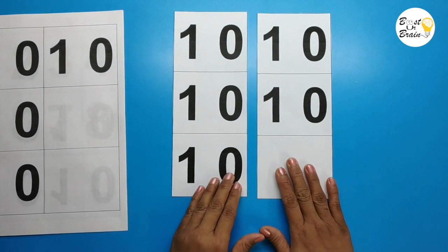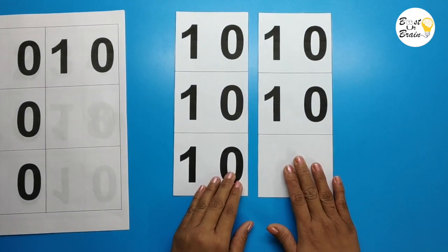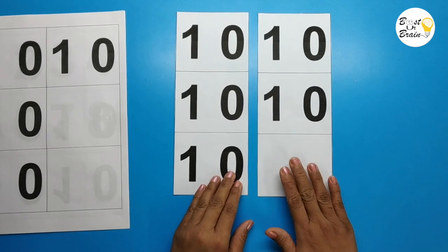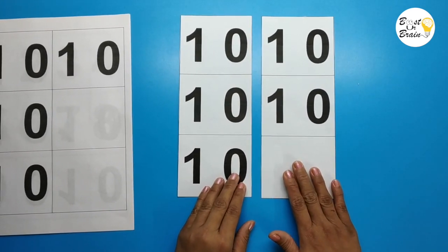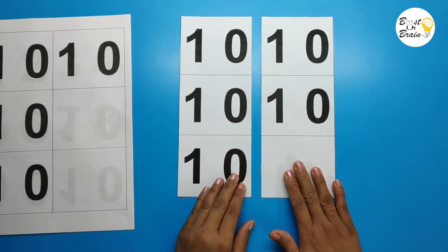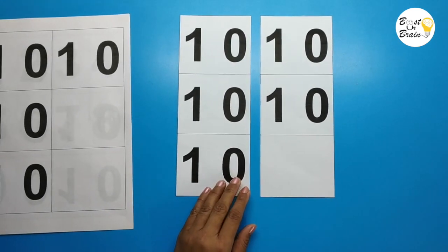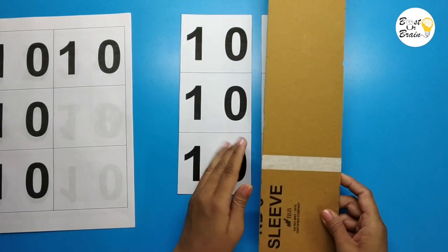Now we need to cut cardboard in such a way so that we can paste 5 to 10 numbers one below the other in a column. I already cut the cardboard like this.